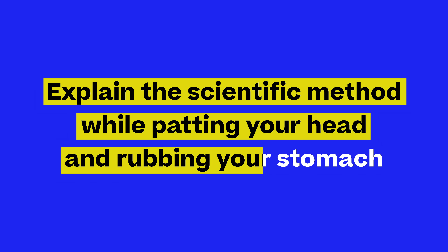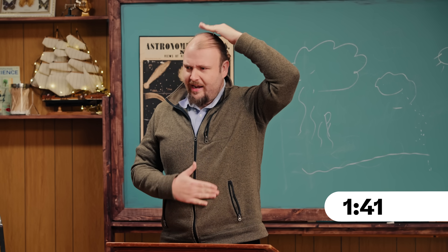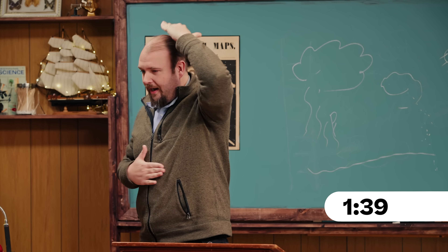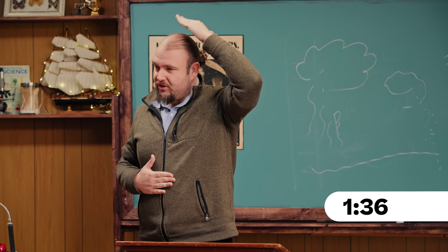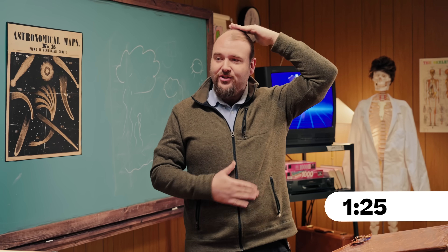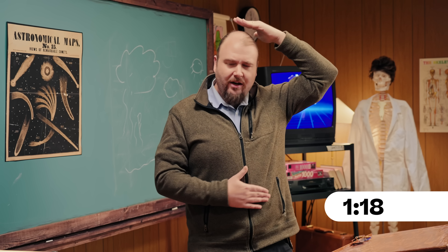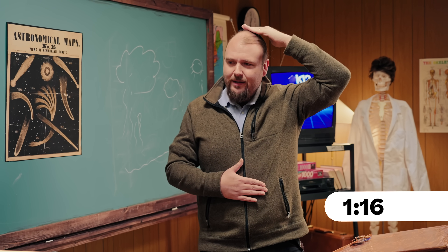Explain the scientific method while patting your head and rubbing your stomach. So first, I have to have some curiosity. I need to have a question in mind, something that I need to investigate. I'm going to do a little research and investigation. So you've done some research, some thinking and prep work. You then make a hypothesis that you can test. Identify your variables, set up the experiment, perform the experiment, and then at the end, evaluate your results and decide if you're going to keep doing it.